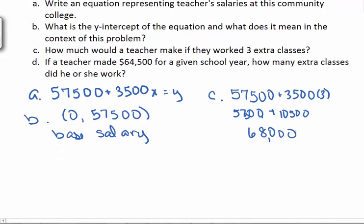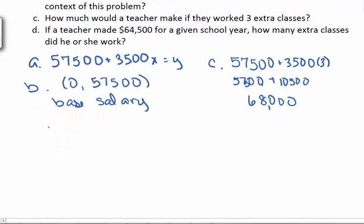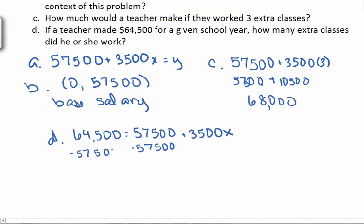For Part D, we know how much they made. We want to know how many extra classes did they teach. Well, we know they made $64,500, and this should be equal to the base salary plus $3,500 times the number of extra classes they worked. We can subtract $57,500 from both sides. And that gives $7,000 equal to $3,500. Dividing both sides by $3,500 gives that this teacher worked an extra two classes.